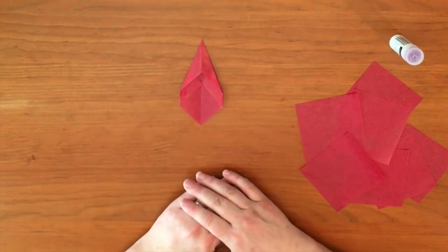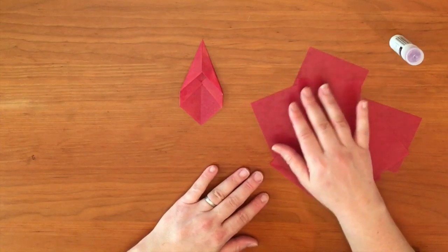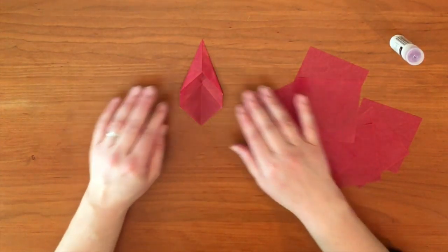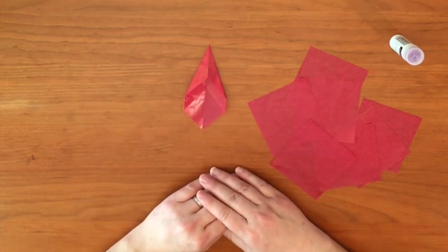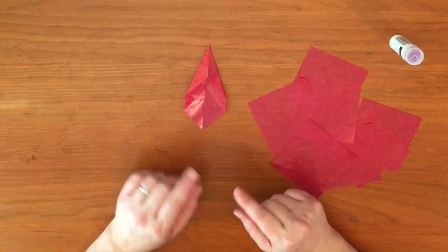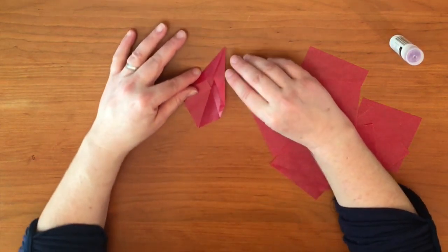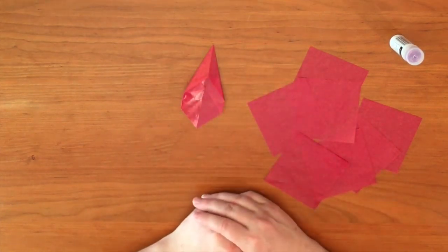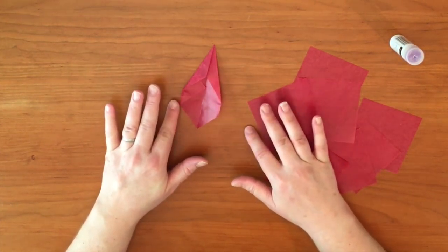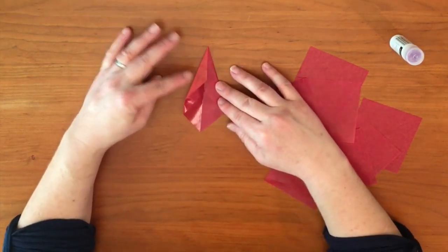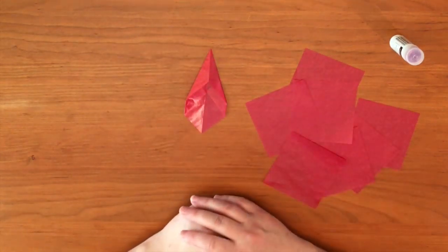Now I could stop here and do the same thing with the rest of the paper and then glue them together, and that would give us a checkerboard star. We're going to do one extra fold here and make a pinwheel star. If you want to make a checkerboard star, stop here and do the same folds on the other eight pieces of paper.